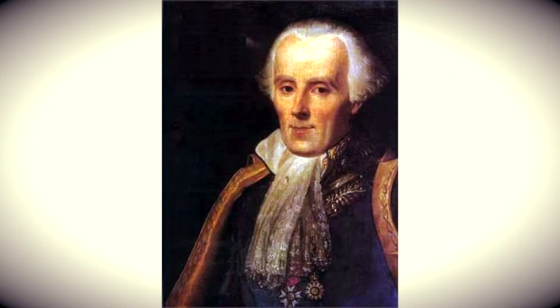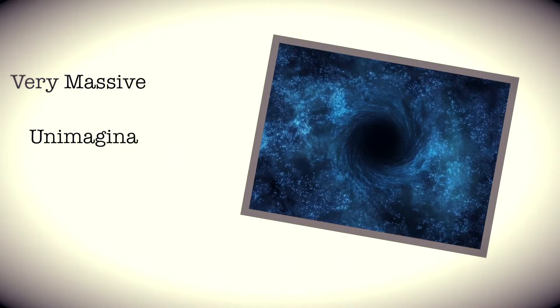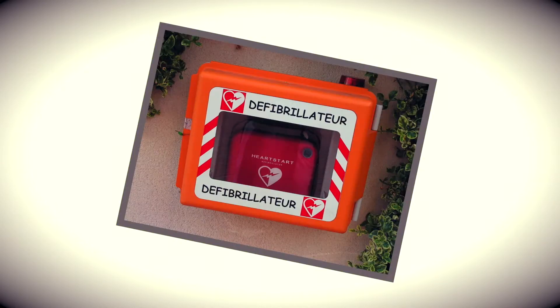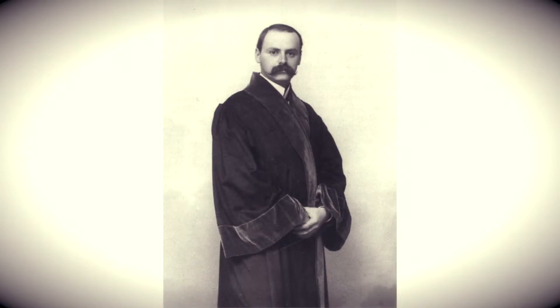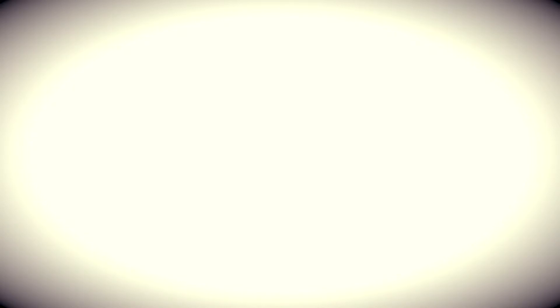Two centuries ago, the English geologist John Mitchell realized that it would be theoretically possible for gravity to be so overwhelmingly strong that nothing could escape. To generate such gravity, an object would have to be very massive and unimaginably dense. At the time, the necessary conditions for dark stars, as Mitchell called them, seemed physically impossible. In 1916, the concept was revived when German astrophysicist Carl Schwarzschild decided to compute the gravitational fields of stars using Einstein's new field equation. Schwarzschild limited the complexity of the problem by assuming the star was perfectly spherical, gravitationally collapsed, and did not rotate.